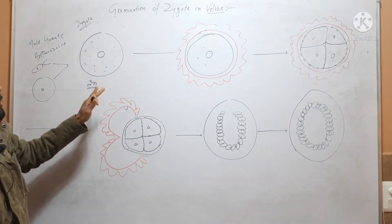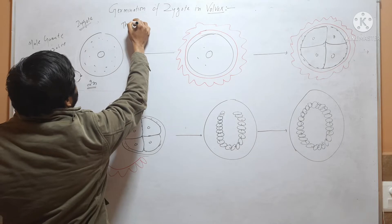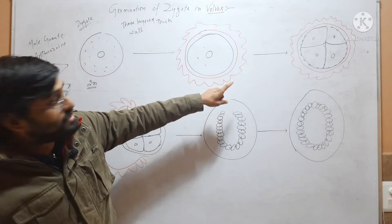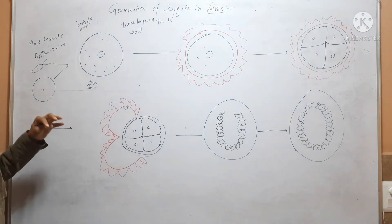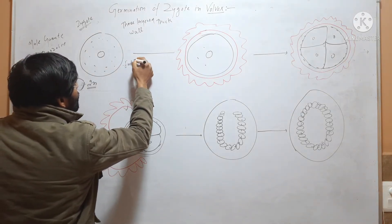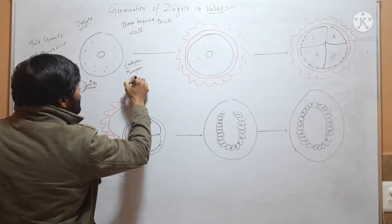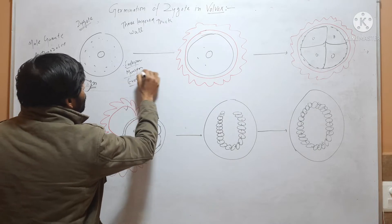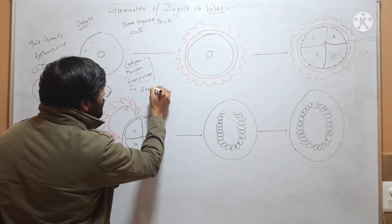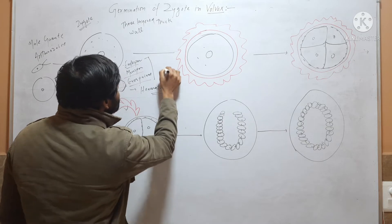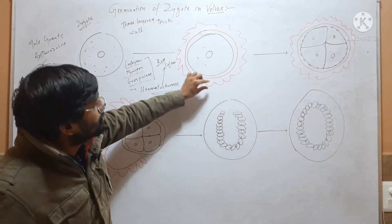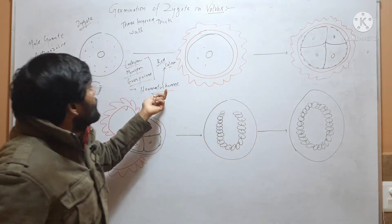After formation of zygote, the zygote secretes 3 layers around itself — that is Endosporium, Mesosporium, and Exosporium. These 3 layers contain Hematochrome, which gives a red color to the zygote. So after secretion of layers, the zygote looks red colored because these layers contain Hematochrome.